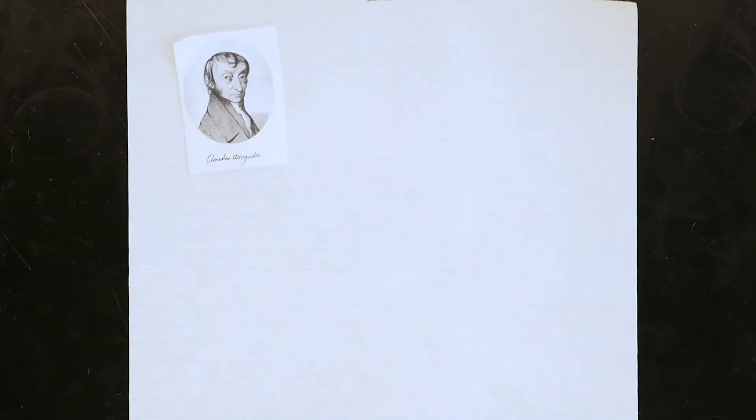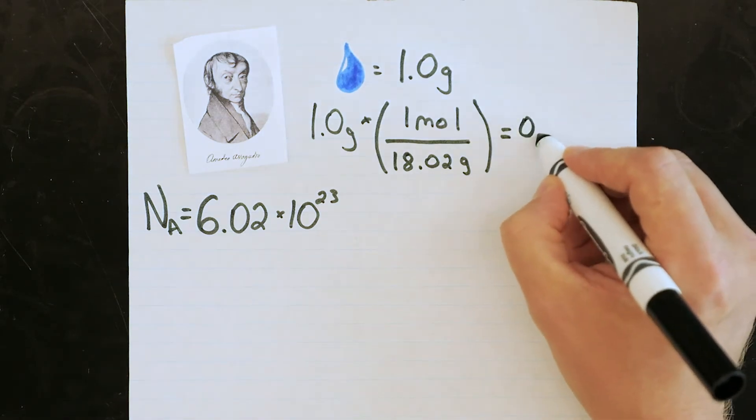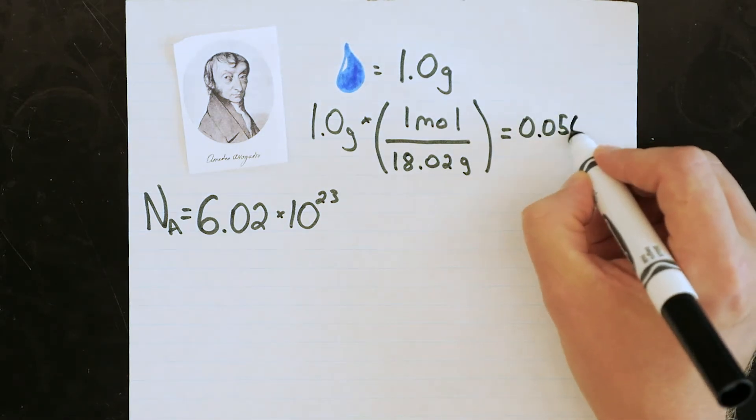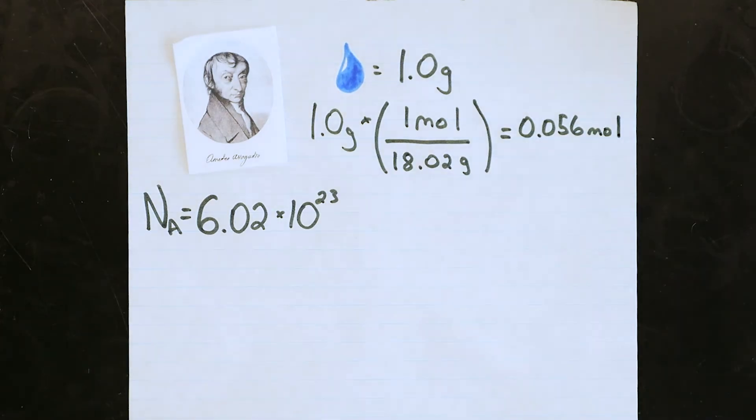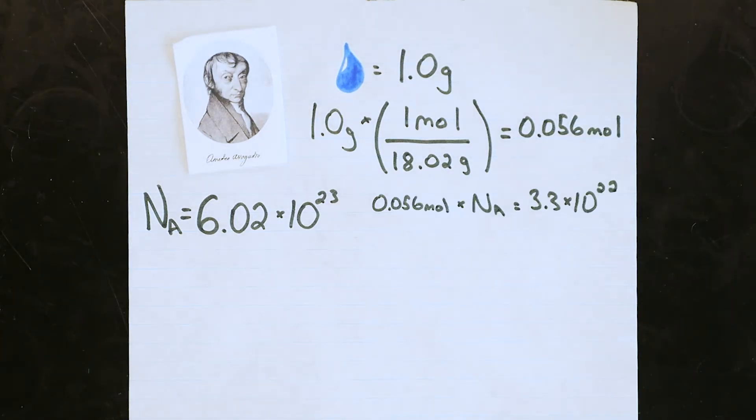Let's remember that we can count molecules using the concept of the mole and Avogadro's number. For example, if I knew that I had exactly one gram of water, I can use the formula weight of water, which is 18.02 grams per mole, to calculate that I have exactly 0.056 moles of water, or roughly 3.3 x 10^22 individual water molecules.